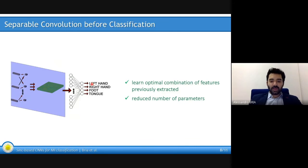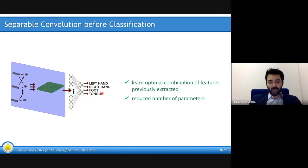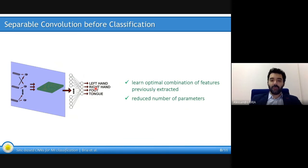The separable convolution is used to combine all the features previously extracted, and the final classification layer performs the classification into four actions: left hand movements, right hand movements, foot movements, and tongue movements. These can then be mapped to four different mental commands.